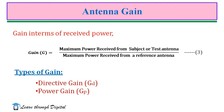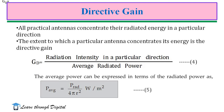There are generally two types of gain used in antenna analysis. One is directive gain, represented as Gd. Another is power gain, represented as Gp. All practical antennas concentrate the radiated energy in a particular direction. The extent to which a particular antenna concentrates its energy is the directive gain.